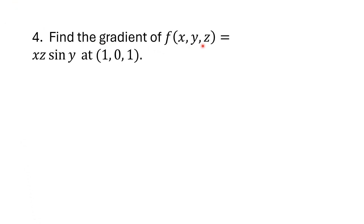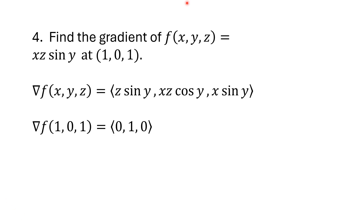Find the gradient of f(x, y, z) = xz·sin(y) at (1, 0, 1). The derivative with respect to x is z·sin(y). The derivative with respect to y is xz·cos(y), since the derivative of sin(y) is cos(y). The derivative with respect to z is x·sin(y). Plugging in x=1, y=0, z=1, we end up with [0, 1, 0].